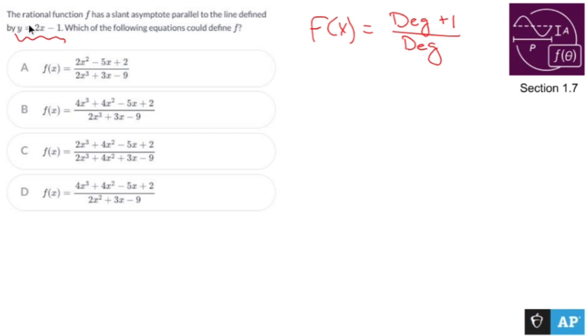Now also, the slant asymptote is defined by y equals 2x minus 1. Oh, it's parallel to that. So what's going to happen is whatever my slant asymptote is, it's going to have a slope of 2, we don't care about the rest. So this is what we need to do.